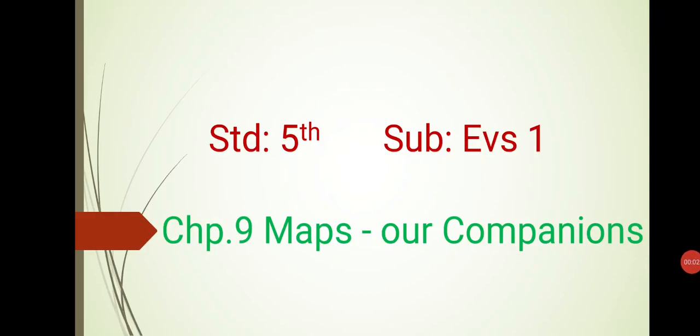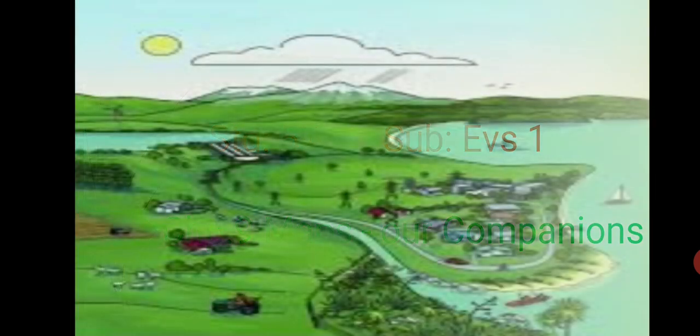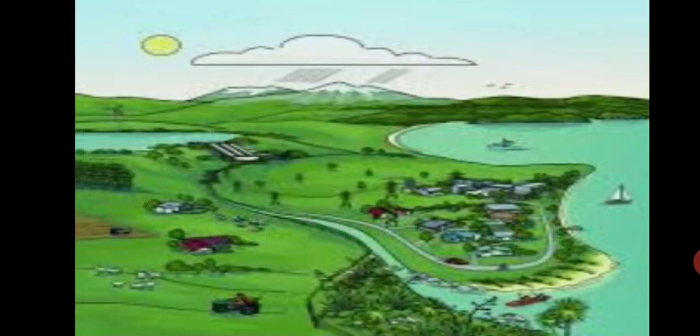Standard 5th Subject EBS 1 Chapter 9 Maps are Companions. Dear Students, the land in an environment is not of the same height everywhere. This unevenness gives rise to various landshapes creating different landforms.